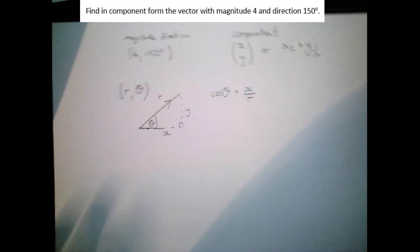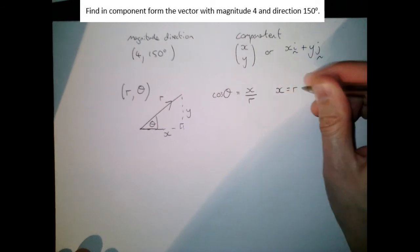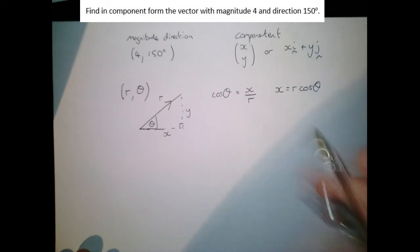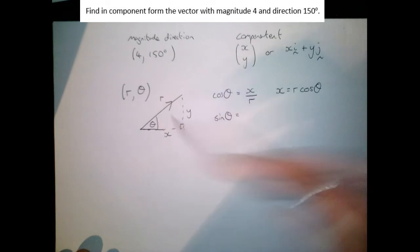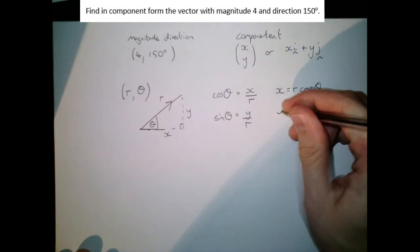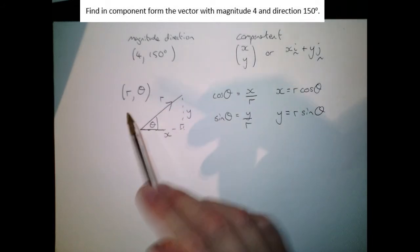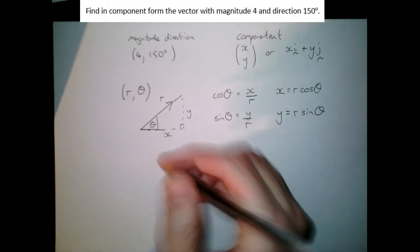Now if I do a little rearrangement of that I can say that x is r cos theta, and that's going to be quite useful. Similarly, sine theta from this triangle is the opposite over the hypotenuse, so that is y over r. And the same rearrangement multiplying by r gives me y is r sine theta. What I'm saying then is that if I have the magnitude-direction form of r, theta, that means my vector is r cos theta, r sine theta.